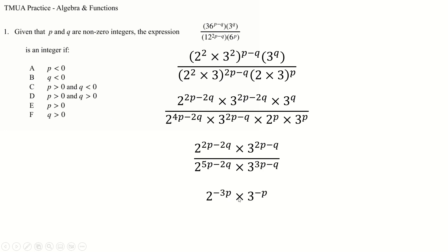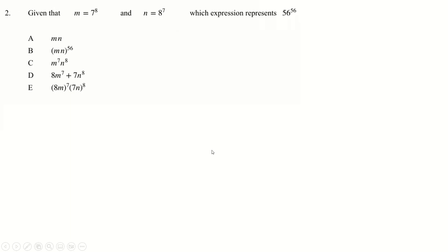This is going to be an integer as long as p is negative, because if p is negative this makes the power a positive integer — assuming p is of course a negative integer — and therefore we'll have a positive power of two and likewise for the threes. So we just need p to be negative and we'll be done.